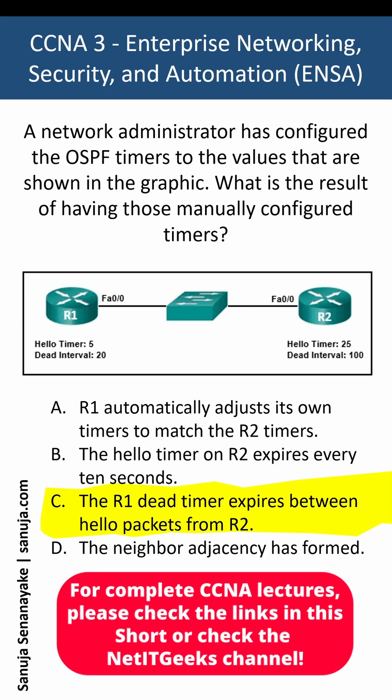The default dead timer is typically four times the hello interval, which is 40 seconds for broadcast and point-to-point networks. That's the answer to this question. Thank you.